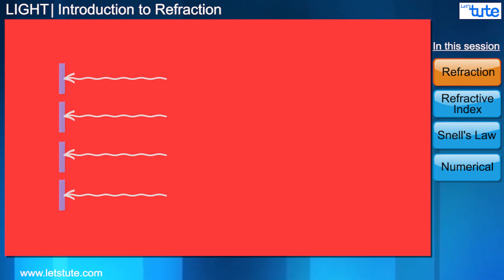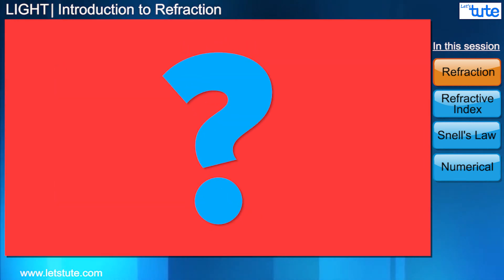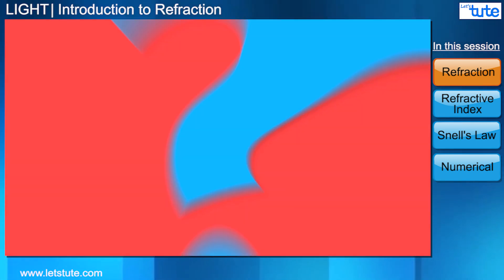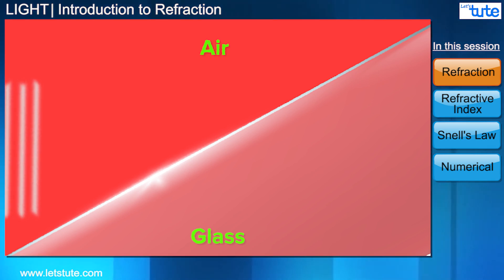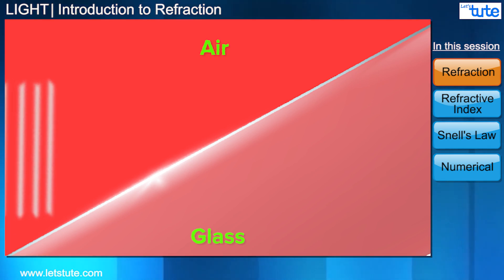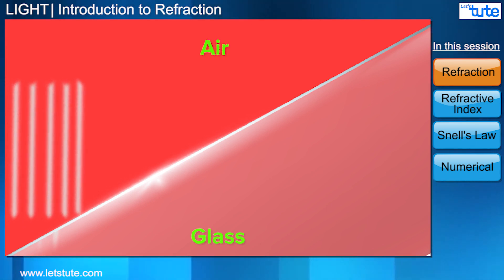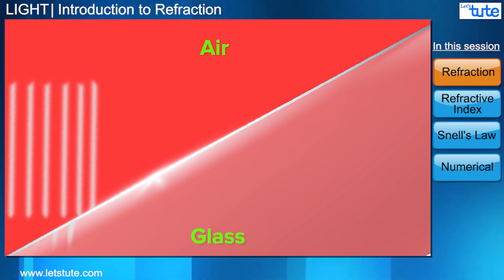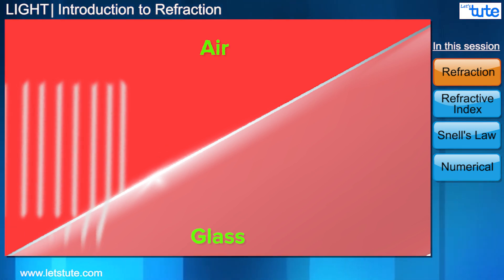So how does this concept help us? Well, because we know that light slows down when it goes from air to glass, the wavefront must also slow down. Now if the light is entering the glass at an angle,